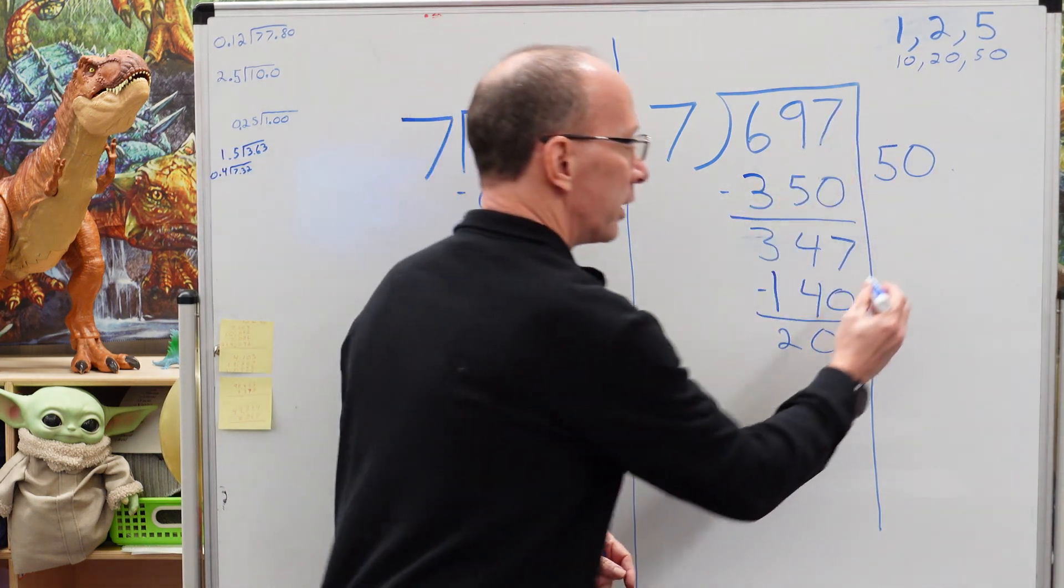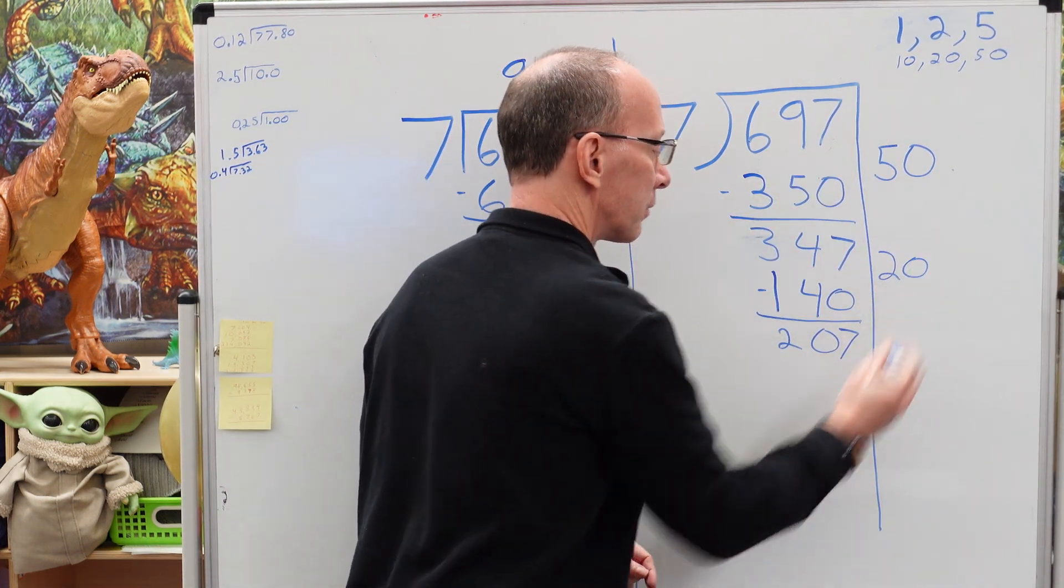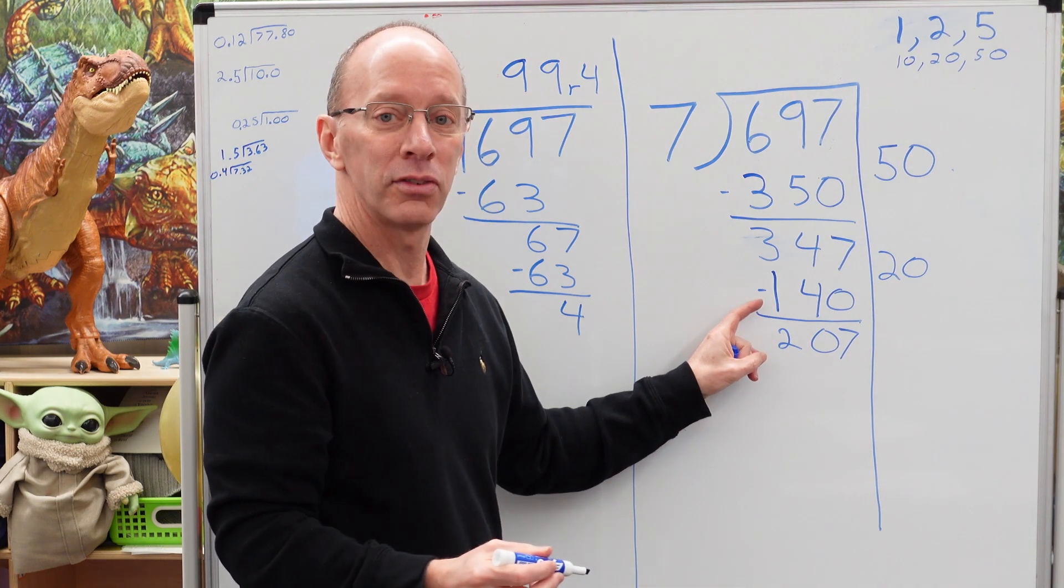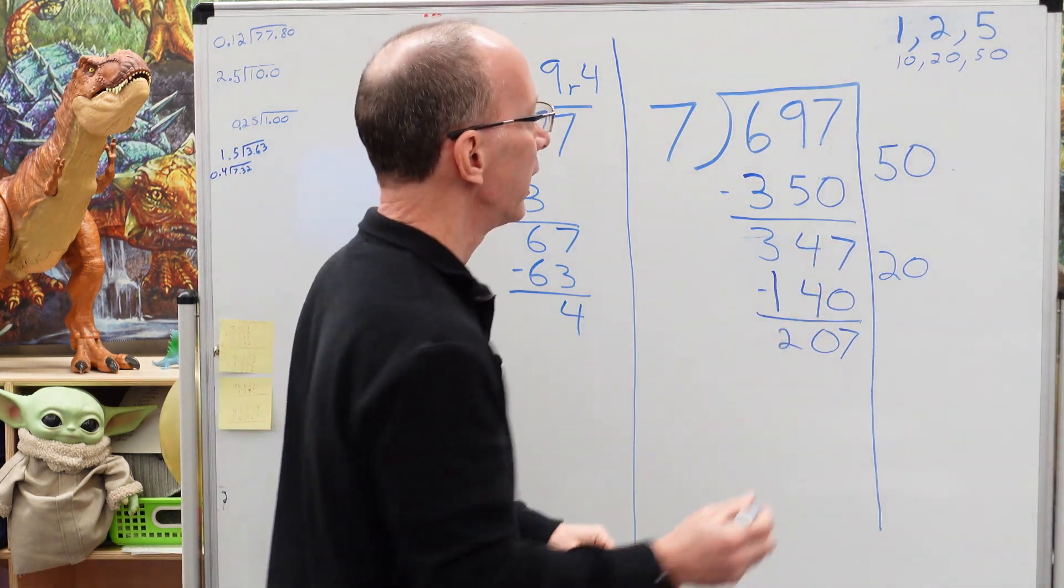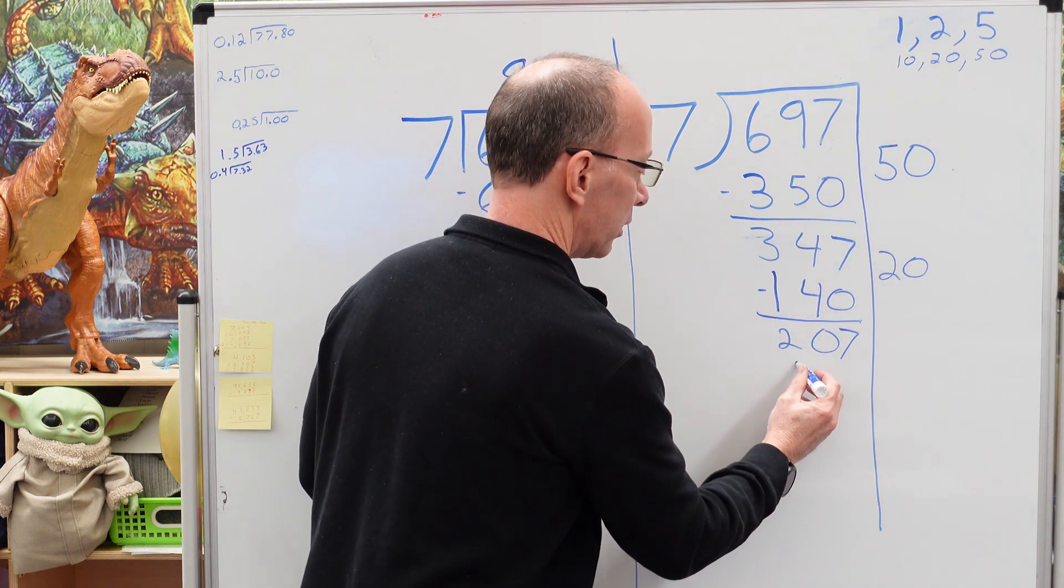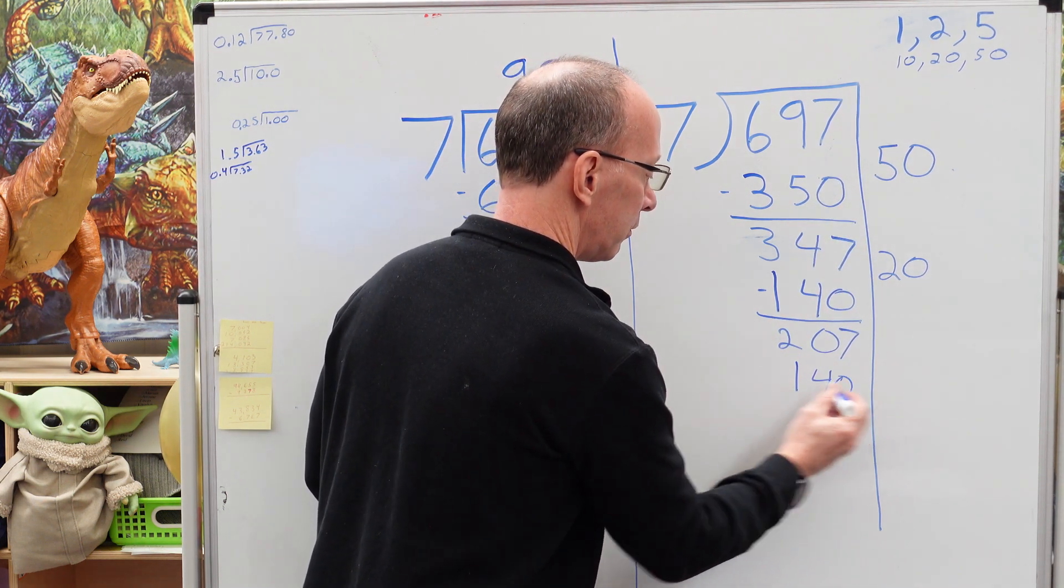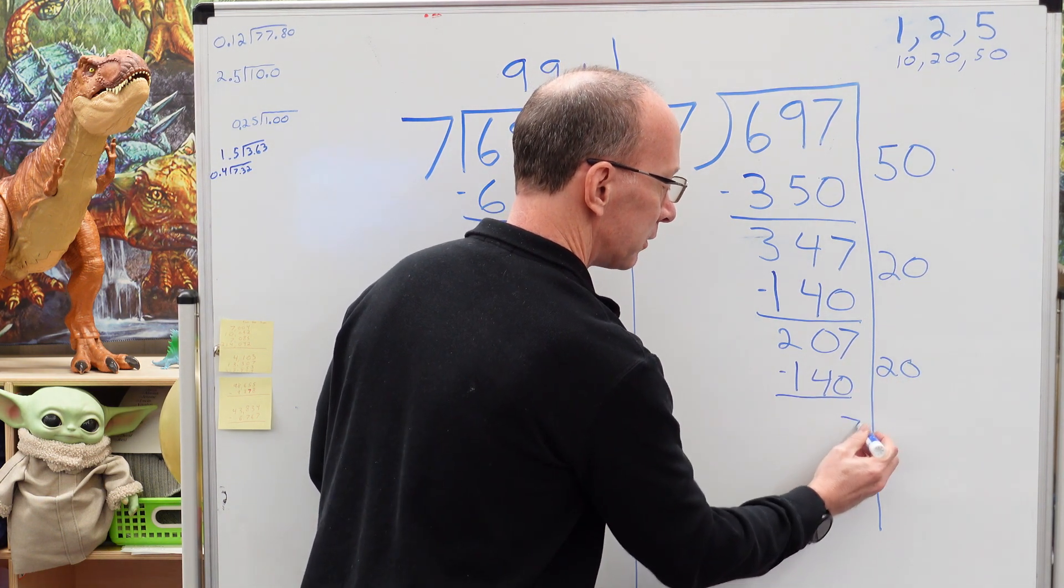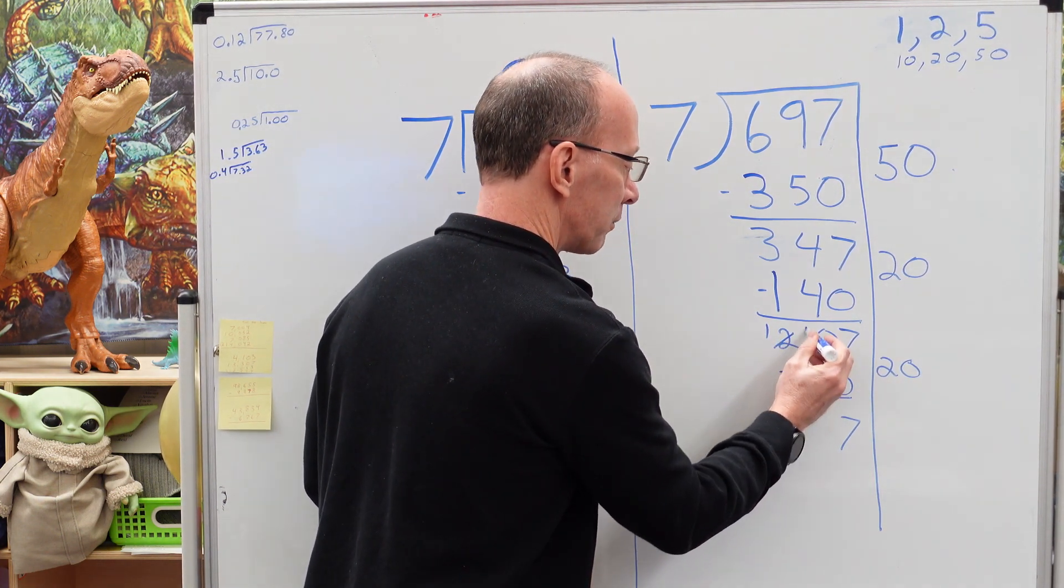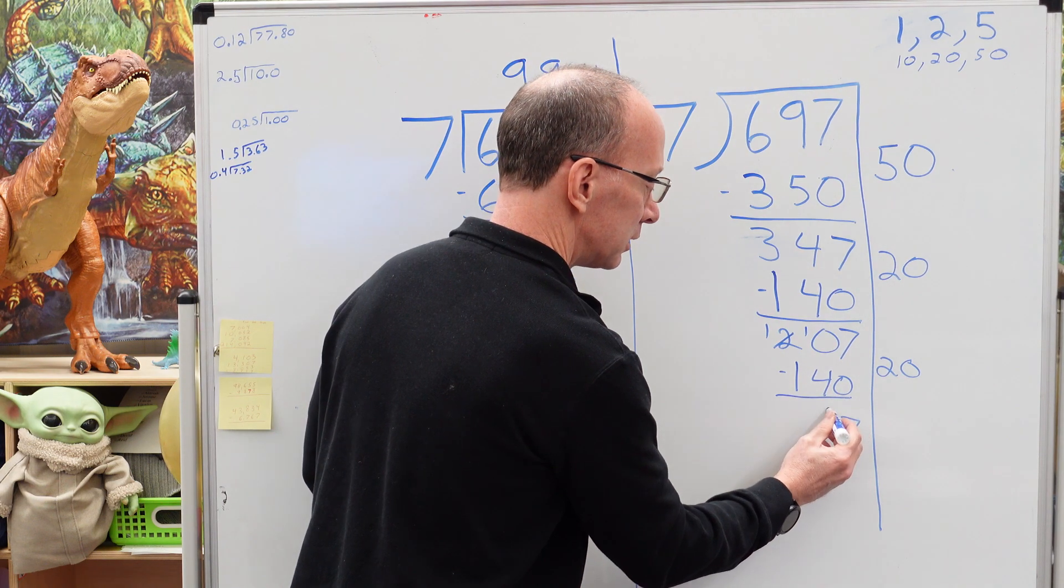Alright. I used the 20. So I'm going to put 20 right here. I can still take 140 out of 207. Alright. So I'm just going to go ahead and put 140 here. Put my 20 and go ahead and subtract. Now I need to do a little borrowing. And this is 67.